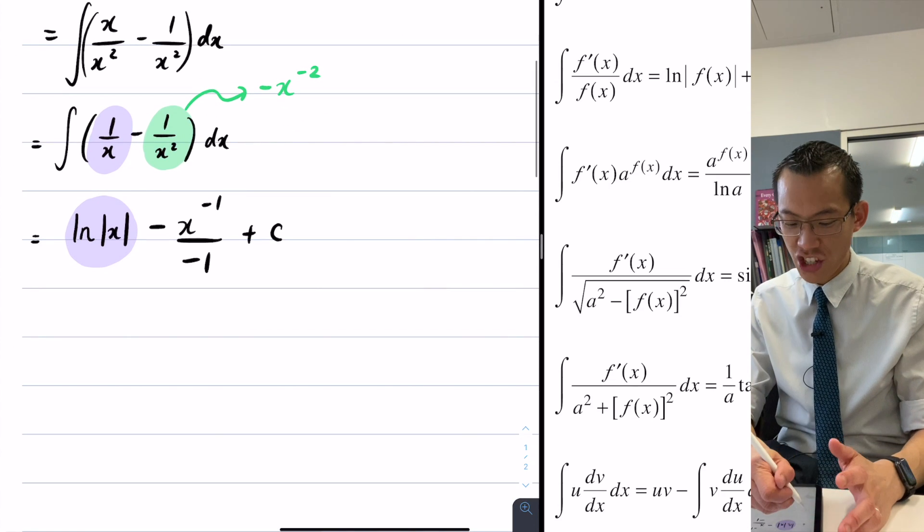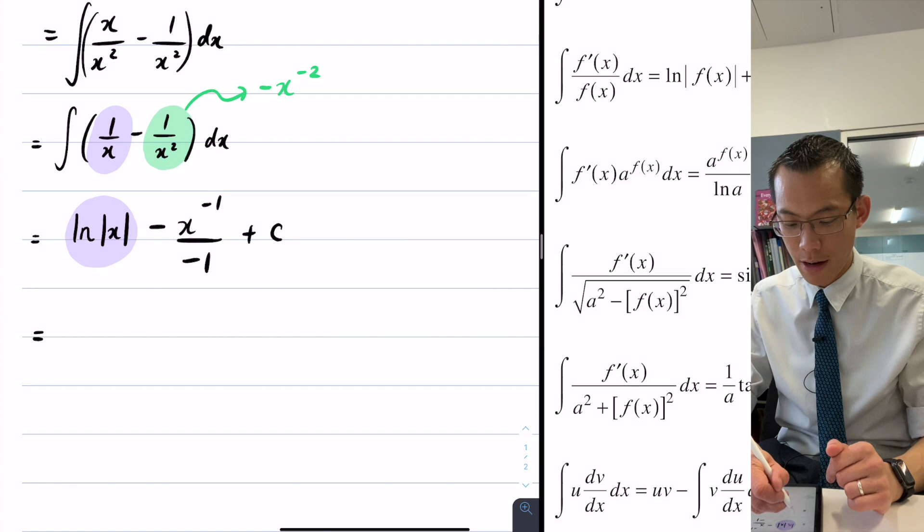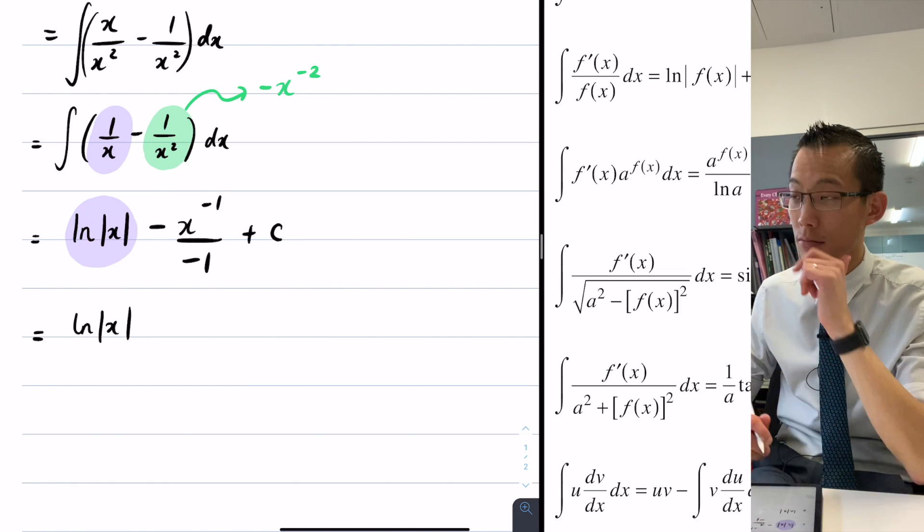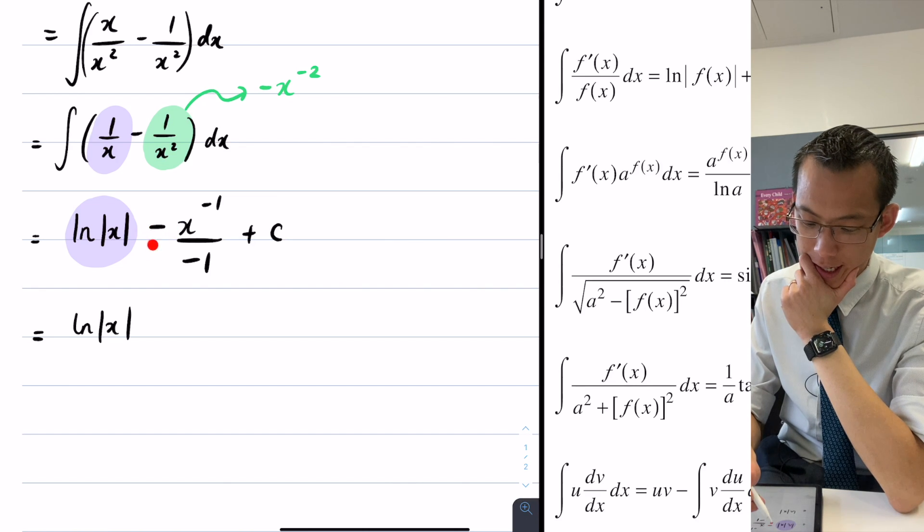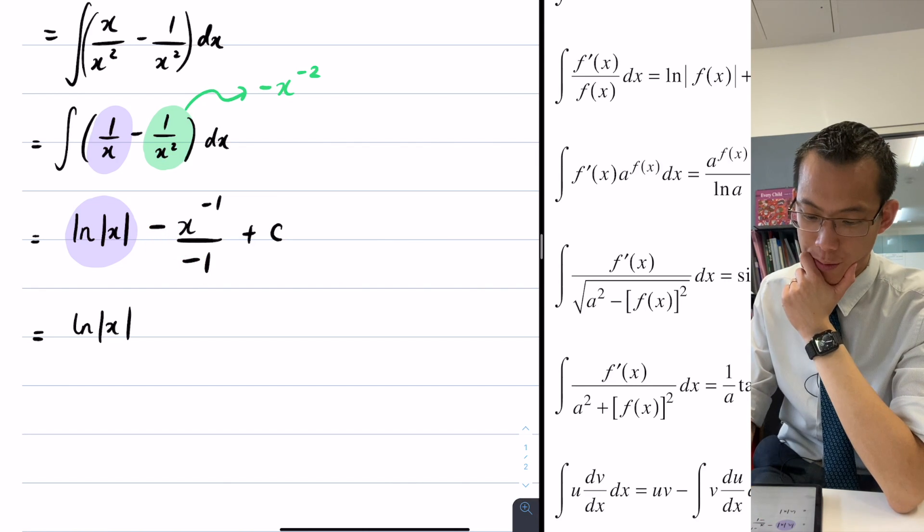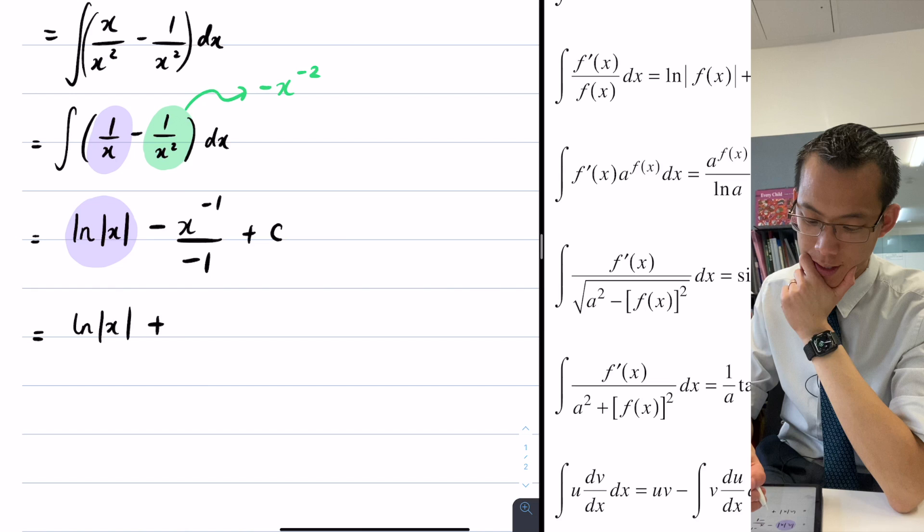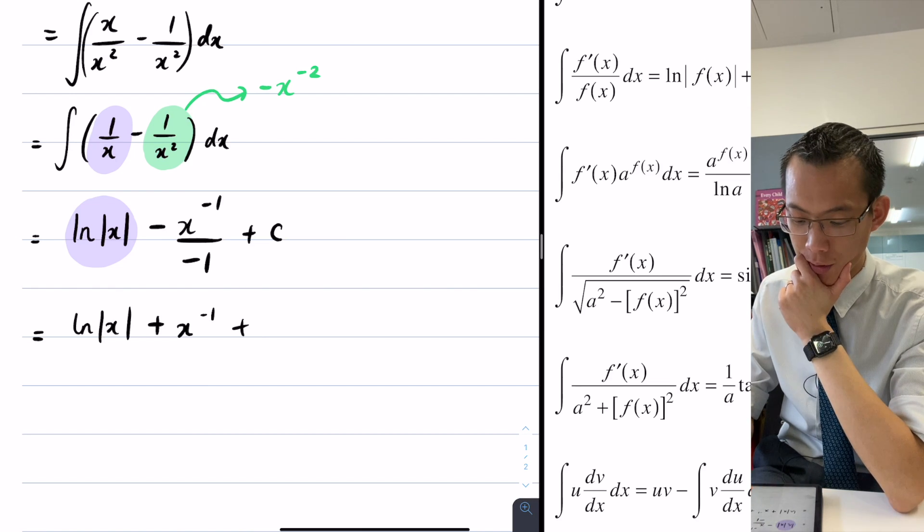At this point, I just need to tidy up, it's a bit of a garbled mess. So I've got my natural log over here. Yeah, so this negative and this negative, they're going to cancel. Okay, which is great. So I'll get plus x to the negative 1, and my constant's still there.